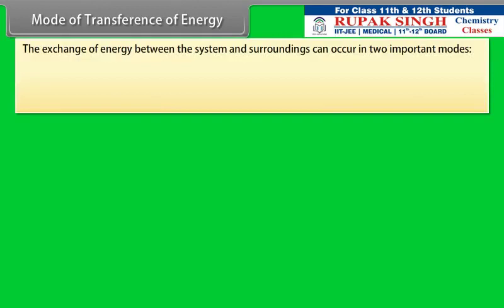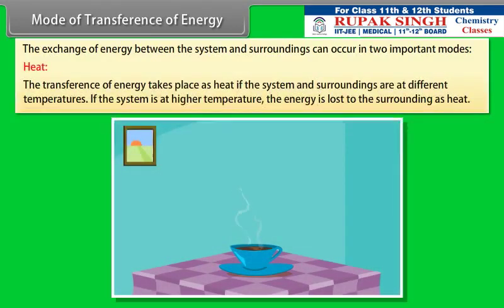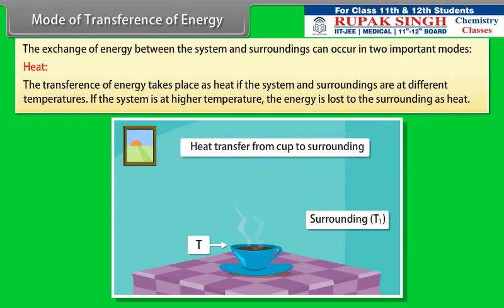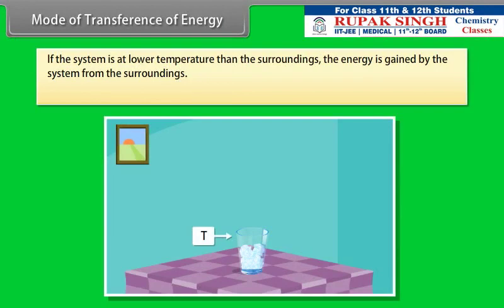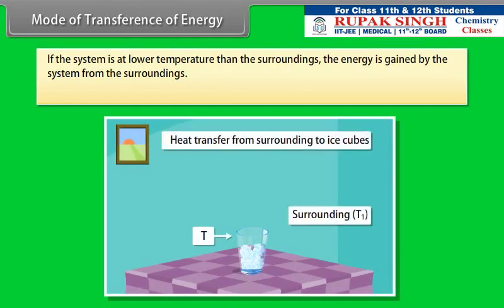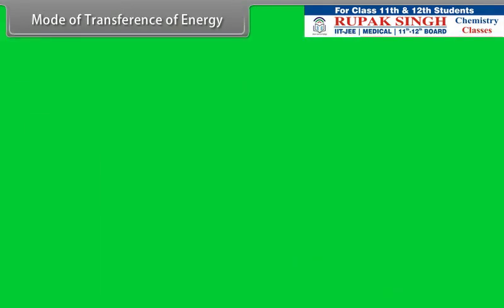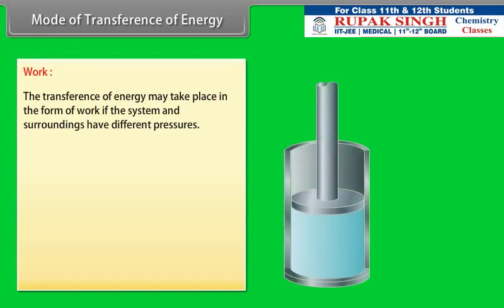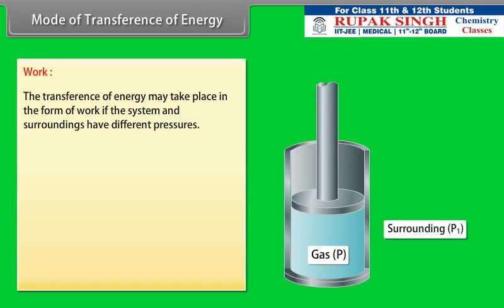The exchange of energy between the system and surroundings can occur in two important modes. Heat: the transference of energy takes place as heat if the system and surroundings are at different temperatures. If the system is at higher temperature, the energy is lost to the surroundings as heat. If the system is at lower temperature than the surroundings, the energy is gained by the system from the surroundings. Heat is represented by Q.